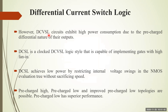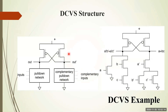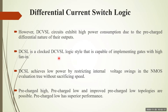DCVSL exhibits higher power consumption — that is a major disadvantage — due to the pre-charge state, which consumes more power. It is a clocked switch logic style capable of implementing gates with high fan-in. This structure achieves low power by restricting the internal voltage swings in the NMOS evaluation tree without sacrificing speed.